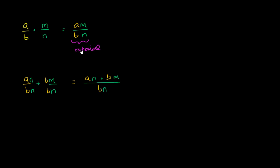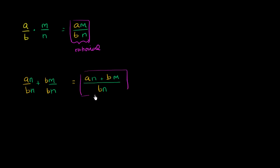all of that over b times n. Now b times n is definitely going to be an integer. And in the numerator, a times n is an integer, and b times m is another integer. The sum of two integers is going to be an integer. So you have an integer over an integer — the ratio of two integers. So the sum of two rational numbers is also rational. To summarize: the product of two rational numbers gives you a rational number, and the sum of two rational numbers also gives you a rational number.